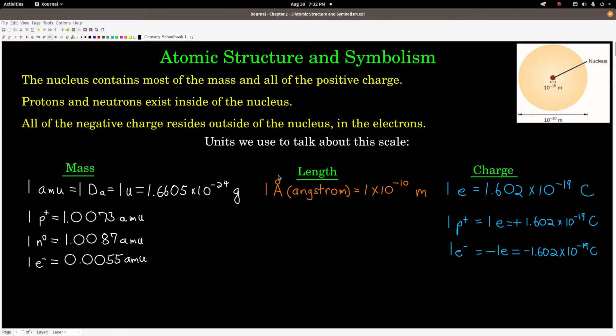So some units that we use to talk about things on this scale. For mass, we use something called the atomic mass unit, or AMUs, which is the same as a Dalton. D-A stands for Dalton. Sometimes we abbreviate AMUs, just use u. All the same thing. And one AMU is 1.6605 times 10 to the minus 24 grams. The mass of a proton, this symbol P plus is a symbol for a proton, is 1.0073 AMUs. The symbol for a neutron is this right here, N with a zero. The mass of a neutron is 1.0087 AMUs. So really close, but not exactly the same mass as a proton. And an electron, this is a symbol for an electron, E minus, has a mass of 0.0055 AMUs.